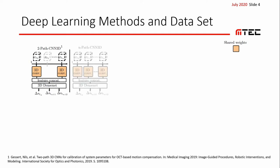Second, we use an entire sequence of volumes and extend the two-path approach to a multipath architecture with shared weights, where the number of paths equals the number of input volumes in the sequence. Afterwards, we concatenate the outputs of the multipath architecture into the feature dimension and subsequently apply our DenseNet with 3D convolutions.